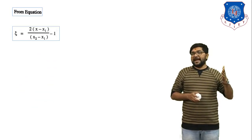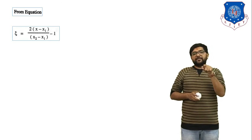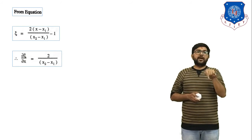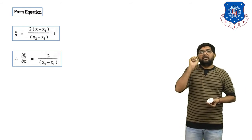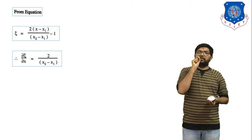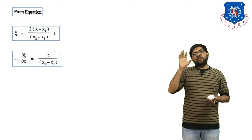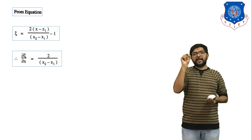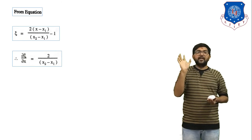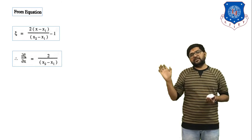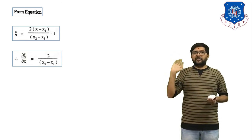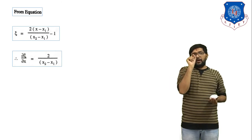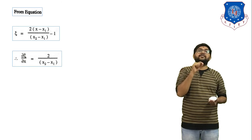From the equation of zeta — which is 2 times (x minus x1) upon (x2 minus x1) minus 1 — we differentiate with respect to x. The term minus 1 is a constant, so its derivative is 0. The factor 2 upon (x2 minus x1) is also constant because x1 and x2 are treated as constants when differentiating with respect to x.